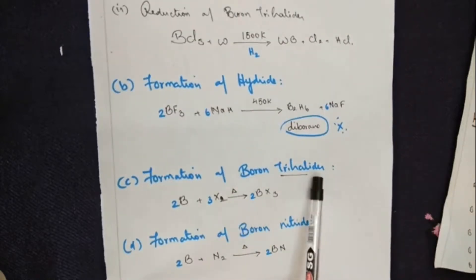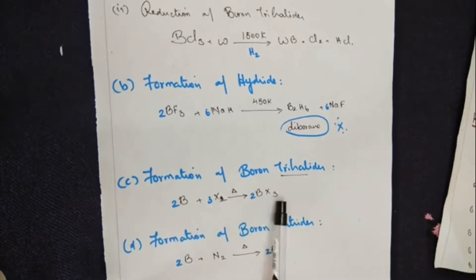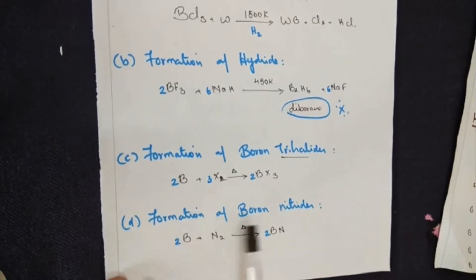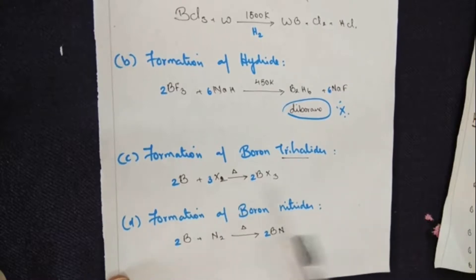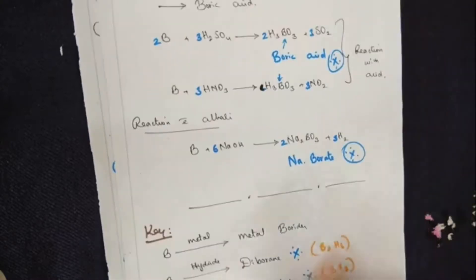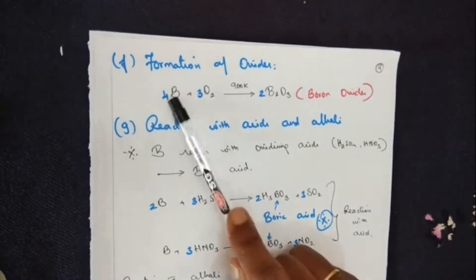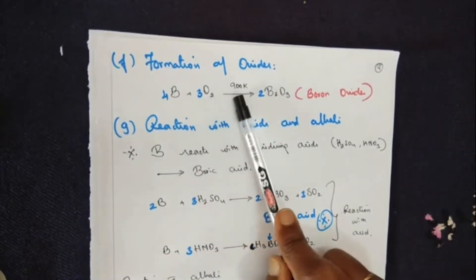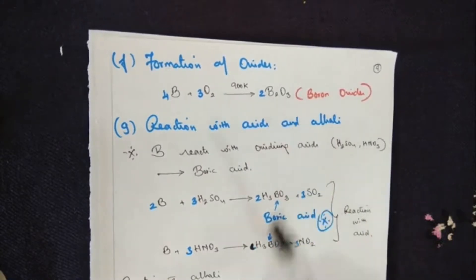Formation of boron trihalide: boron treated with a halogen gives boron trihalide — the balanced equation is shown in blue ink. Formation of boron nitride: boron treated with nitrogen gives boron nitride. Formation of an oxide: boron treated with oxygen at the given temperature condition gives boron oxide, formula B2O3.